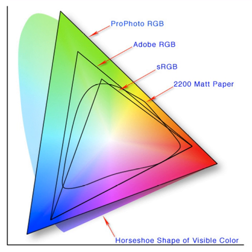CIE 1931 XYZ color space was one of the first attempts to produce a color space based on measurements of human color perception; earlier efforts were by James Clark Maxwell, Koenig and Dietrichi, and Abney at Imperial College, and it is the basis for almost all other color spaces. The CIE RGB color space is a linearly related companion of CIE XYZ. Additional derivatives of CIE XYZ include CIE LUV, CIE UVW, and CIE LAB.